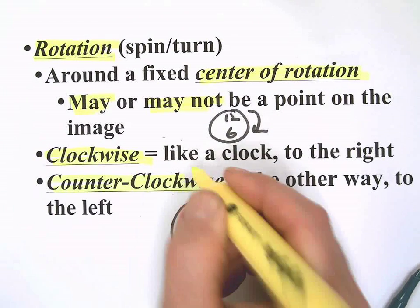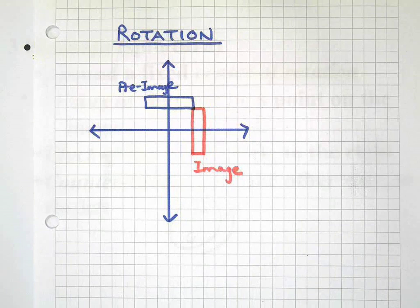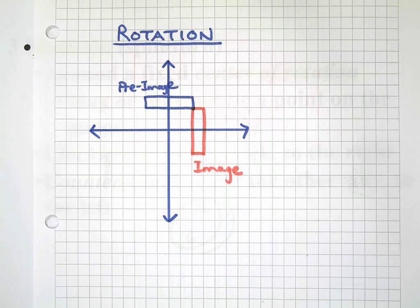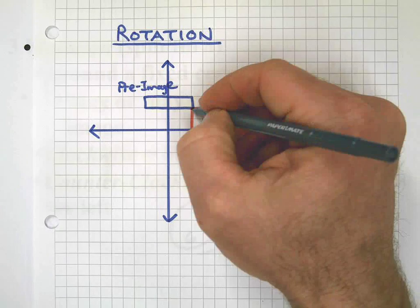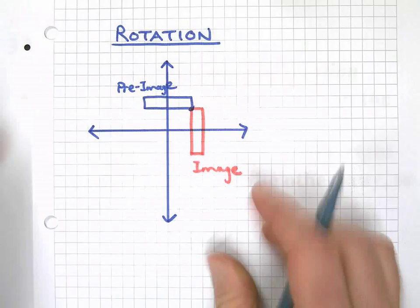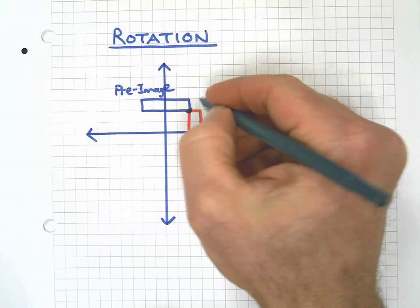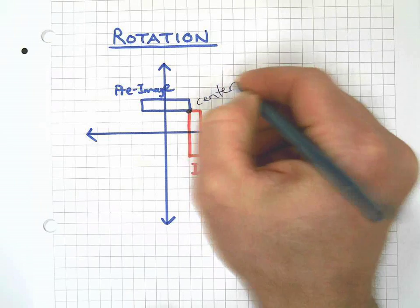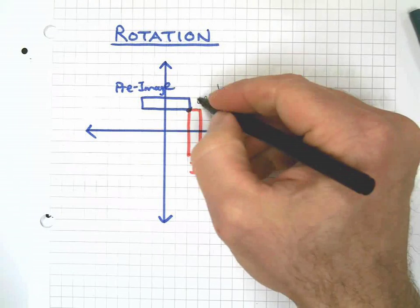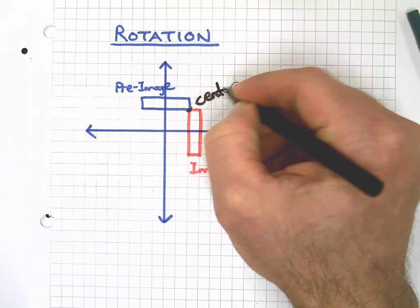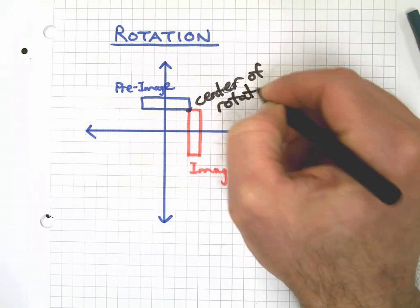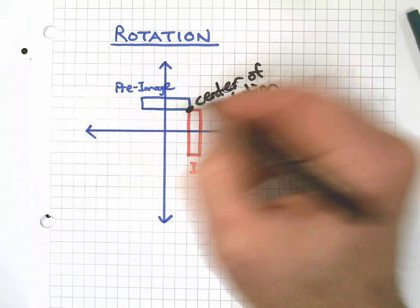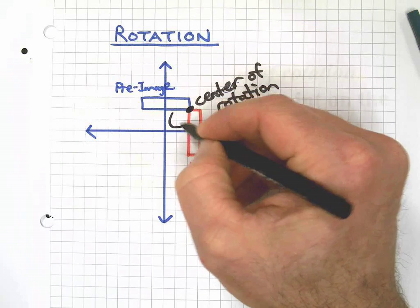So that takes care of our rotations. Here's an example. I've got the pre-image or my before, and I got my after image here. Here is my point of rotation, right, my center of rotation. A ballpoint pen, where'd that come from? A center of rotation.